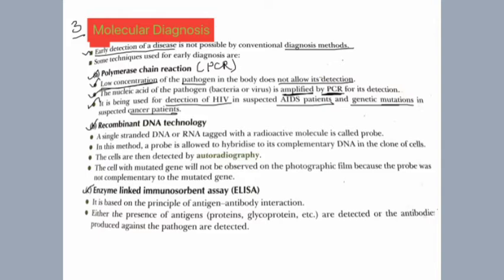If HIV is found in the blood, then the person is an HIV patient. If there is a gene mutation for cancer, and changes have come in the gene, that will cause cancer in the body. Before it spreads, we can cure it through gene therapy or other available techniques — this is what we do with early diagnosis through molecular diagnosis using PCR.